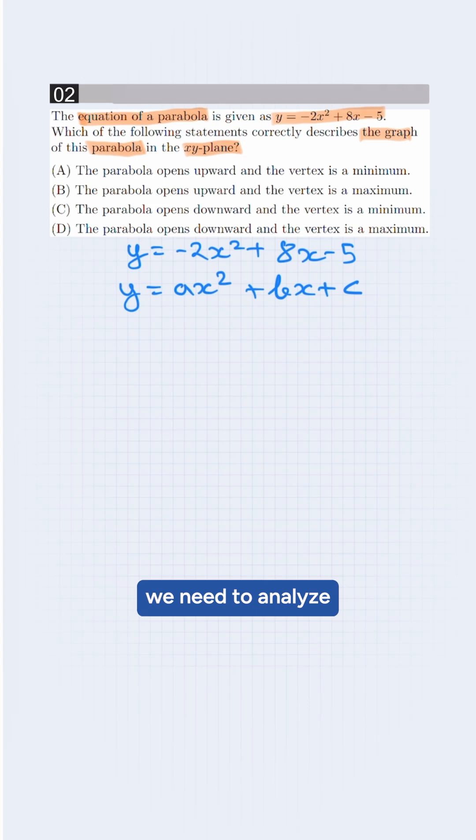Here is the coefficient. We need to analyze the coefficient, which is a. So a is minus 2 here, which is negative. Since a is negative, the parabola opens downwards. If it was positive, it must open upwards. So we eliminate options a and b.